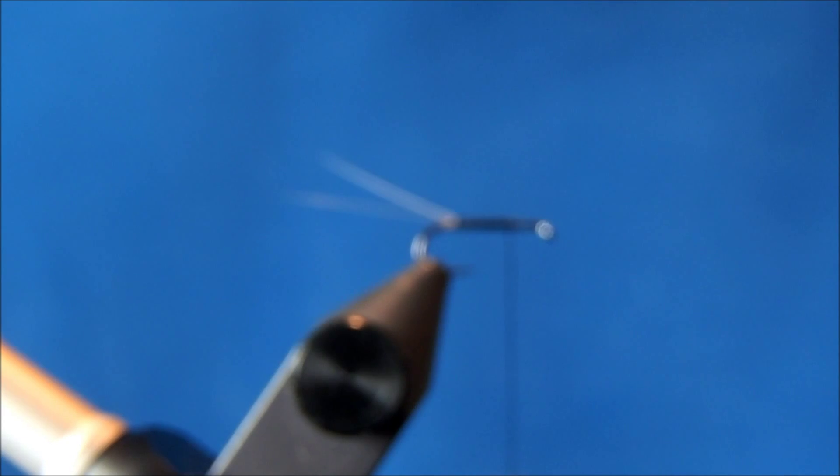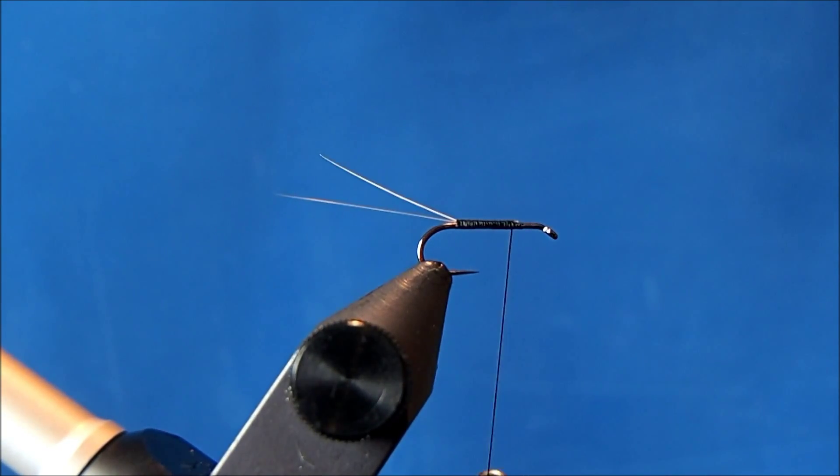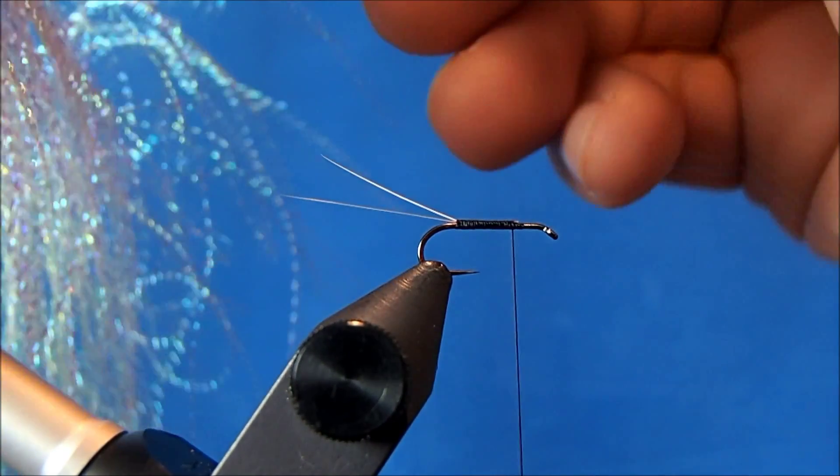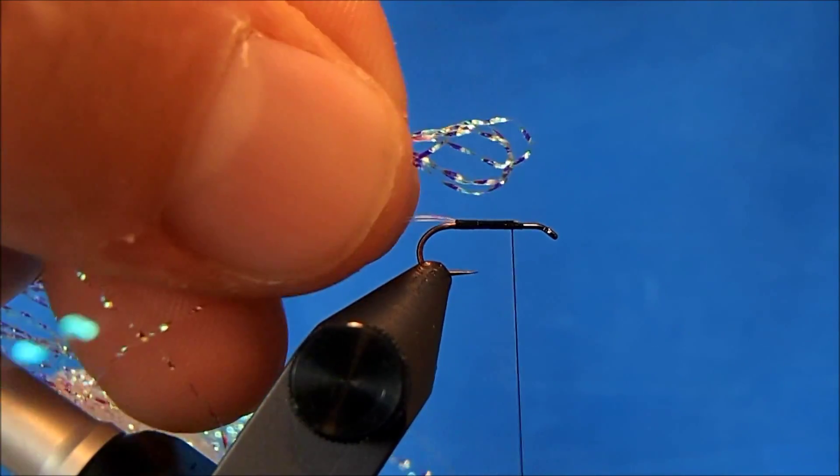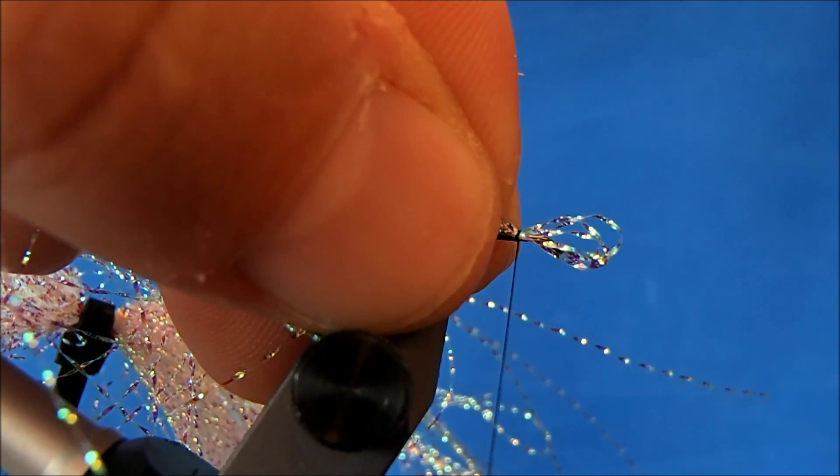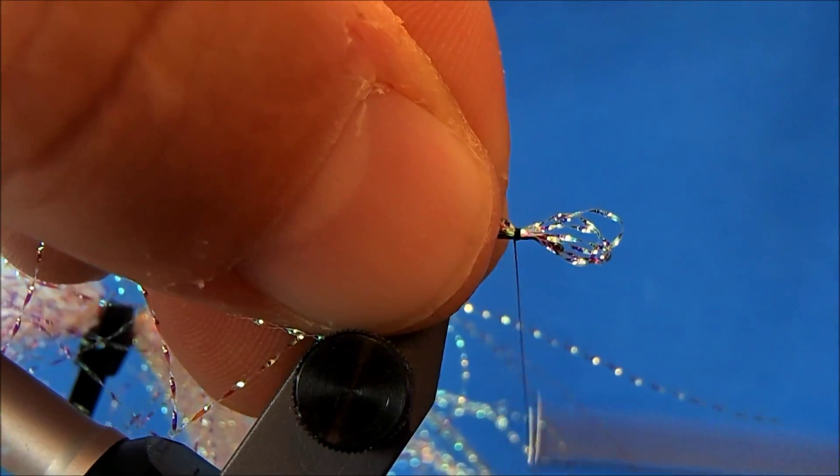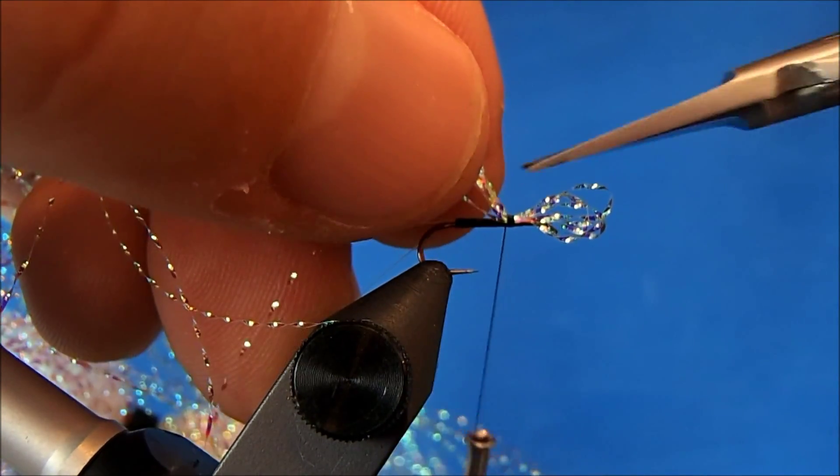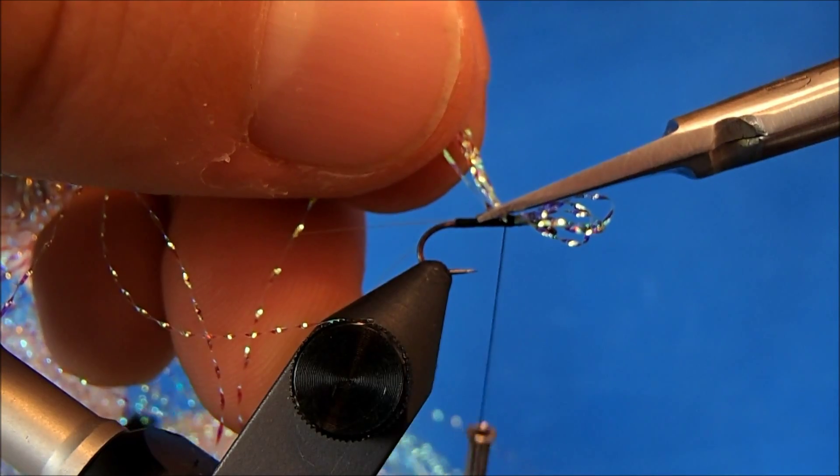So I've got those strands looped together. I'll set it on top, and however far they extend from your thread to the end of them is how far out the wings are going to go. Then I'll come back and trim them.